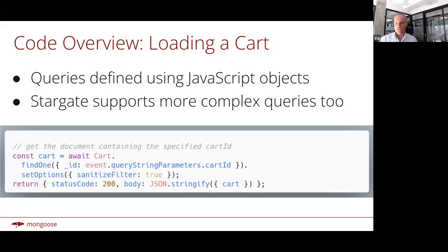For loading a cart, carts also have a findOne method that lets you pull out a single document that matches the given query filter. Query filters are defined using JavaScript objects. In this case, we have a very simple query that finds one document by an ID pulled out of the HTTP request's query string. Stargate does support much more complex queries too — you'll have to take a look at the other sample apps to see those.